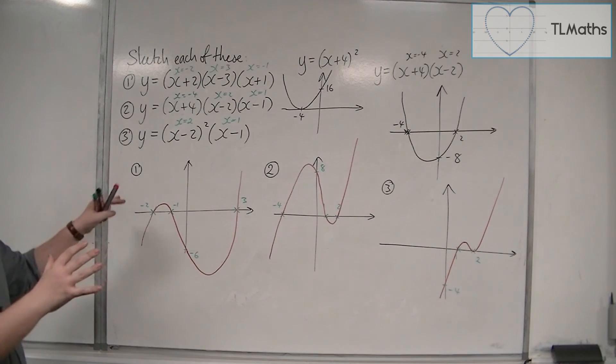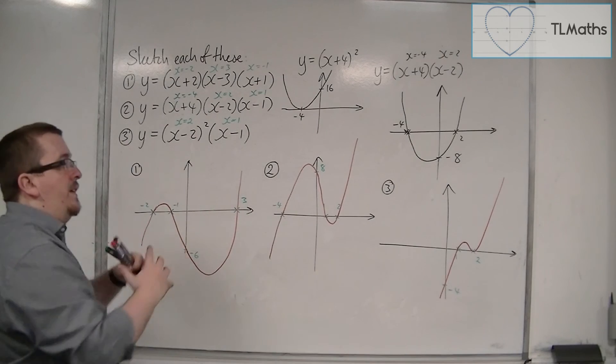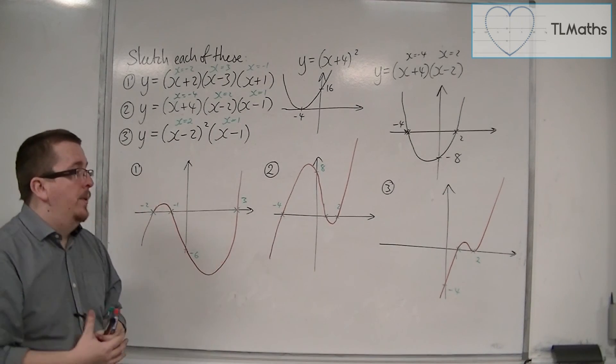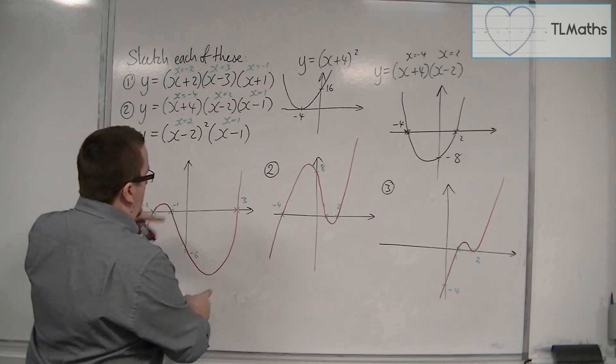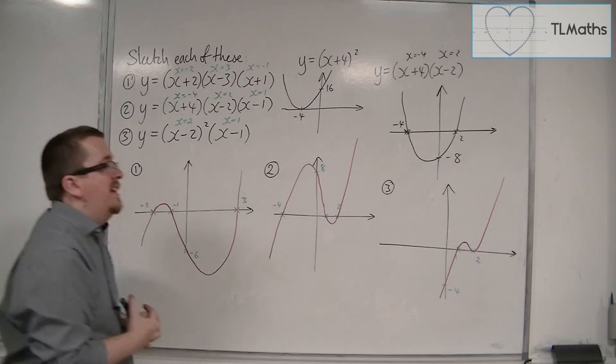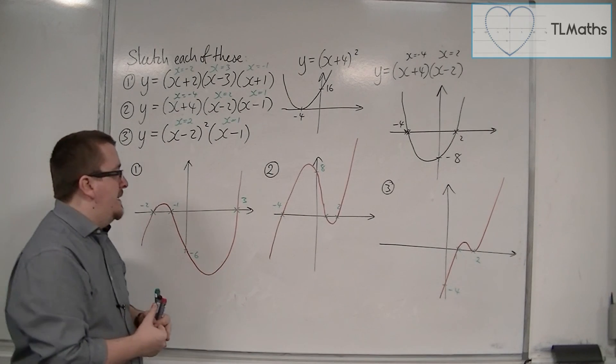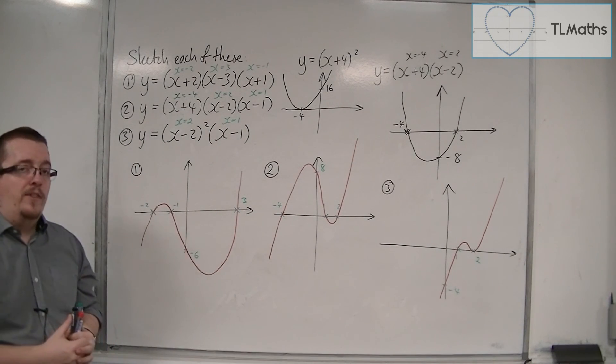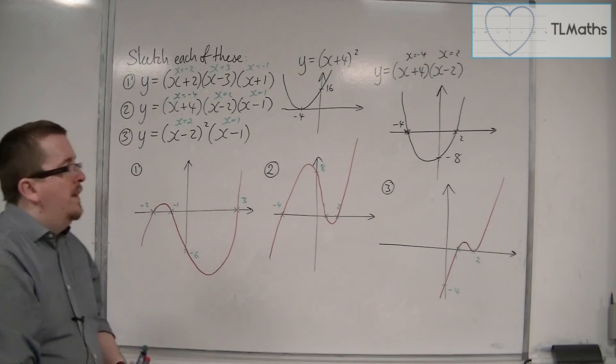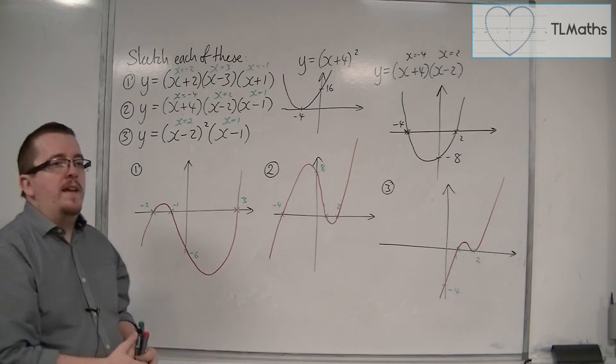And then shoot off like so. So you can see that all three of these have effectively the same sort of shape. They've got a minimum and a maximum point each time. It's just identifying where they're crossing the x-axis, where they're crossing the y-axis, doing a bit of dot-to-dot as you go. They're not too tricky once you get the hang of it.